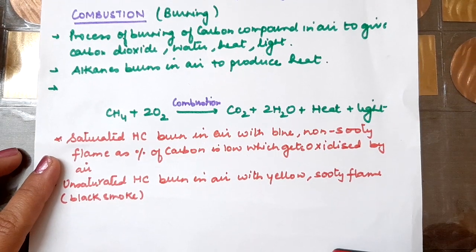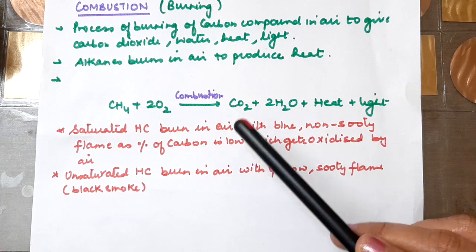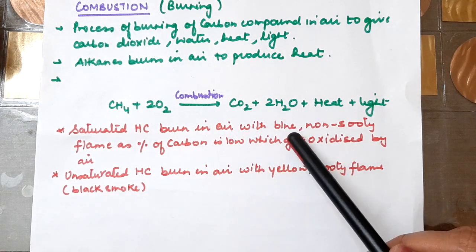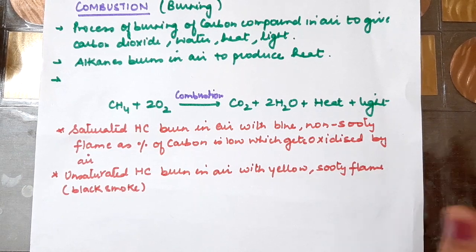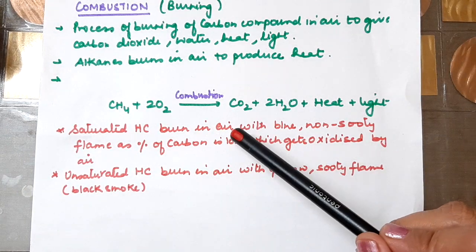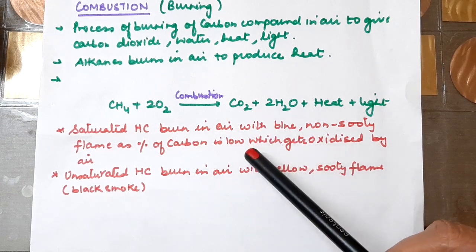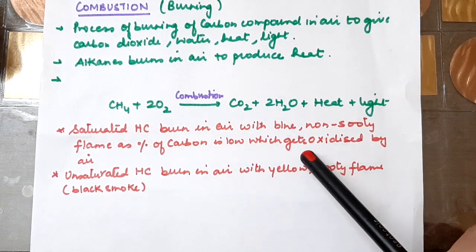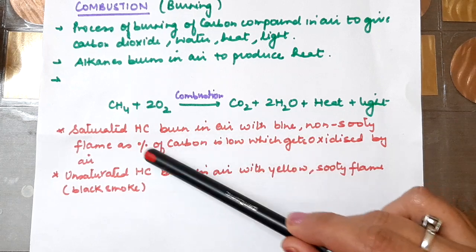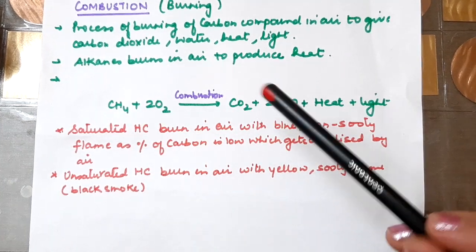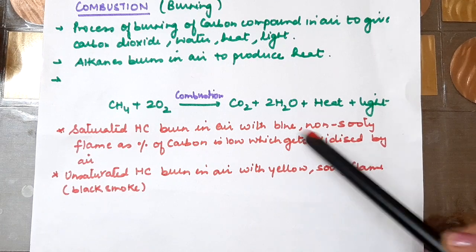Saturated hydrocarbons burn in air — that is, they burn with oxygen in the air — and they produce a blue and non-sooty flame, meaning very little smoke. This happens because the percentage of carbon is low, and when it gets oxidized by the air, the amount of carbon released is very less. That is why it gives a blue and non-sooty flame.